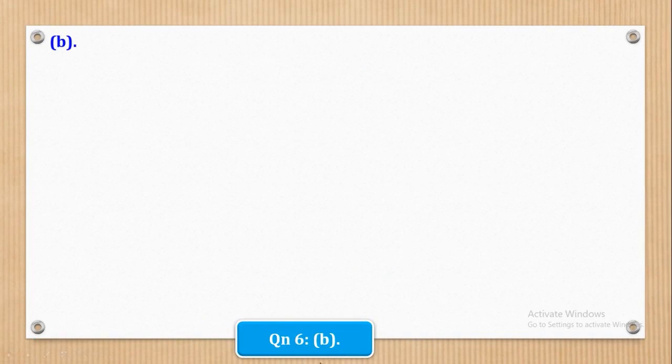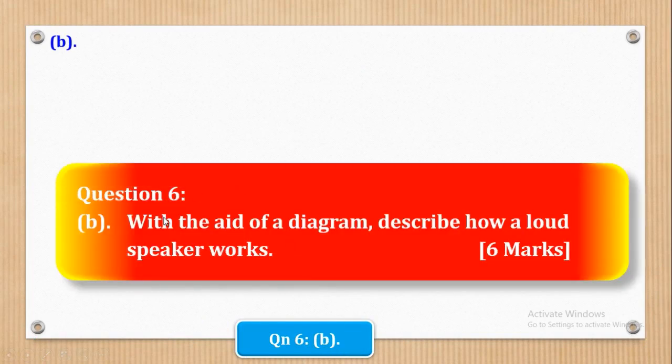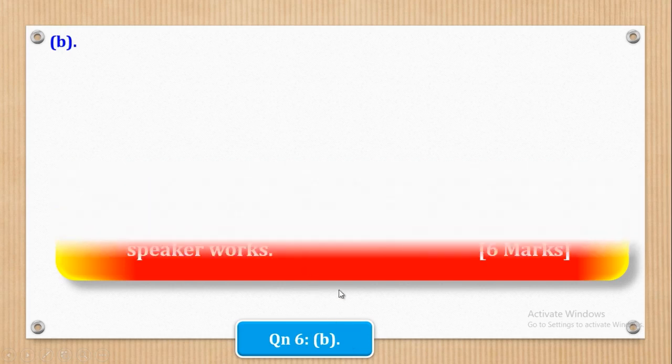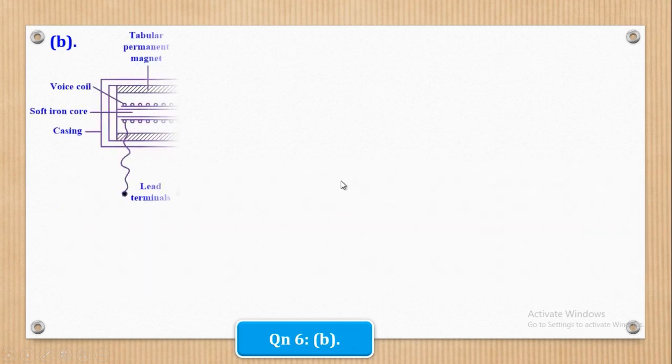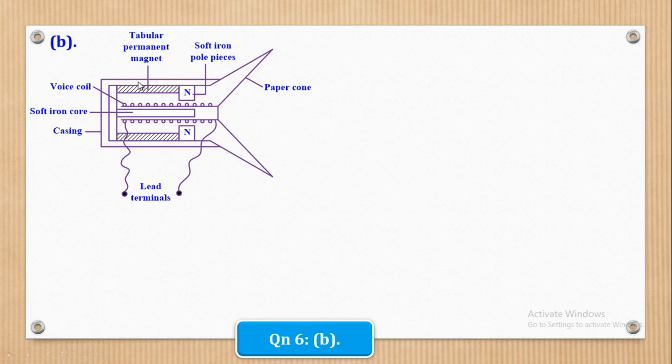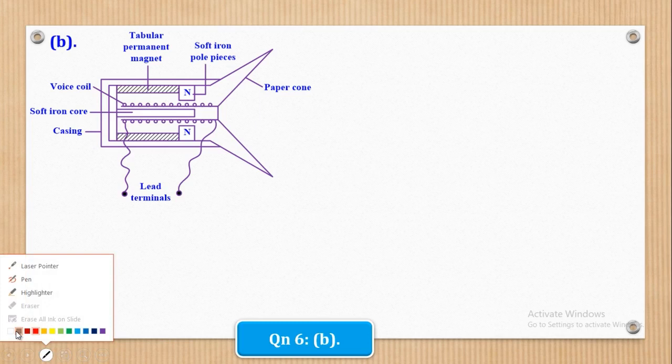So now we shall go to part B. Part B says, with the aid of a diagram, describe how a loudspeaker works. I know this word, with the aid of a diagram. So a diagram, there is no way you can avoid it. So that is the diagram. You have to draw it very well.